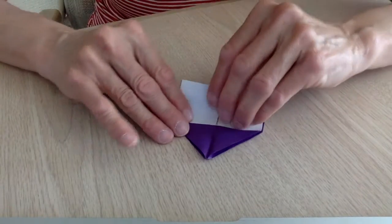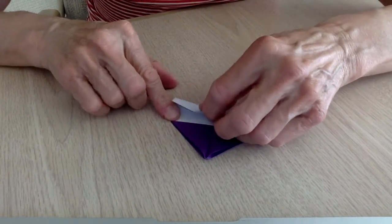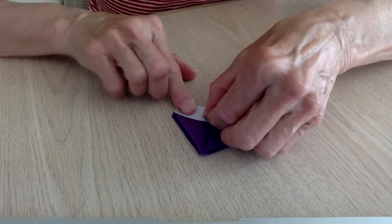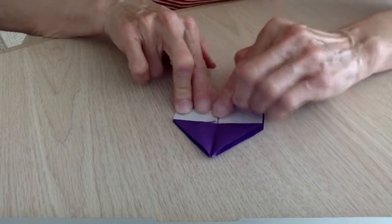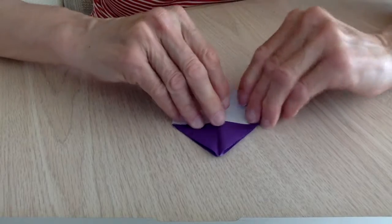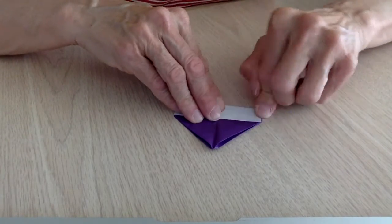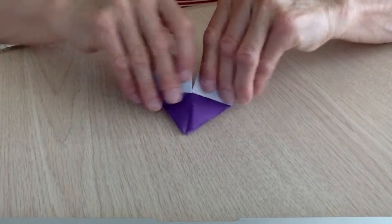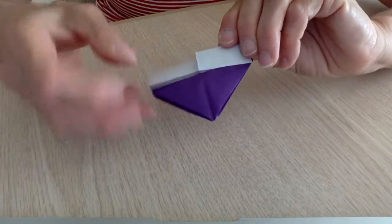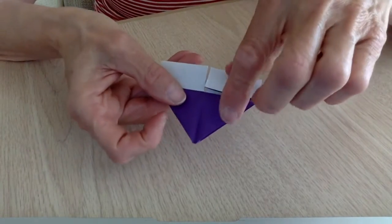And then you need to make a hem. Bring the bottom to the edge of the triangle. Bring the bottom to the edge of the triangle like this.